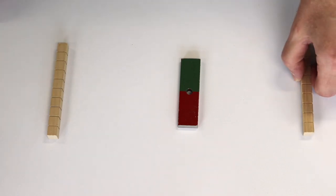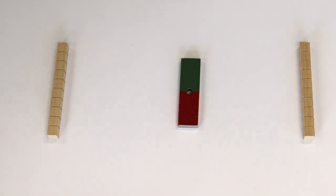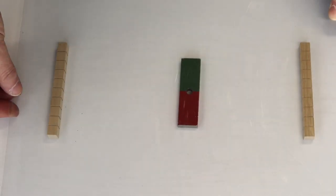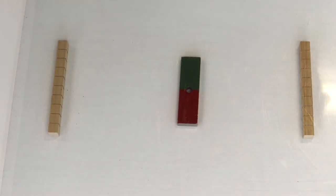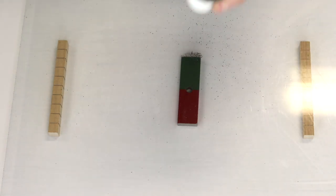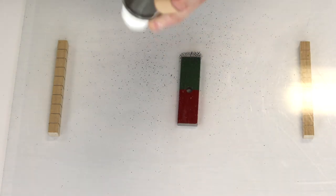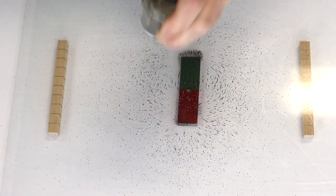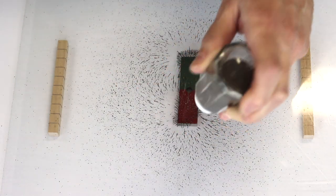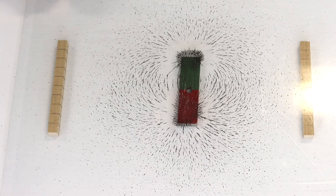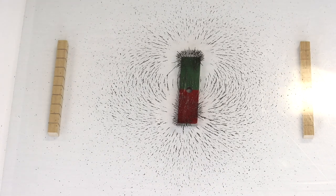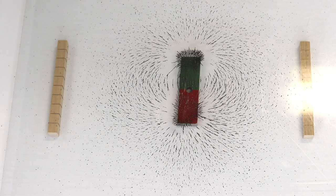However, to avoid the small bits of iron sticking to the magnet, I'm going to put a plastic sheet on top of the magnet. And now I'm going to sprinkle some iron filings on the plastic sheet. I'm just going to gently tap the plastic sheet, and this is the magnetic field of a bar magnet.